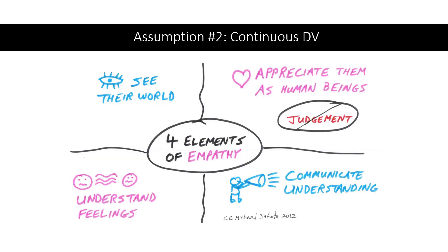Our second assumption is that our dependent variable — level of empathy for the victim — must be continuous, measured at the interval or ratio level. Participants responded to two items measuring empathy, such as 'I feel sorry for the woman in this scenario,' rated on a seven-point Likert scale from one (strongly disagree) to seven (strongly agree). In psychology, we generally treat Likert scale data as continuous, so we meet this assumption.